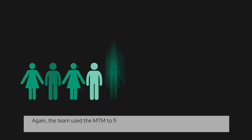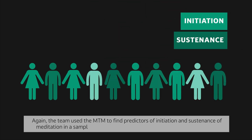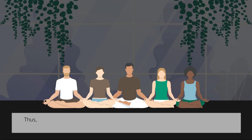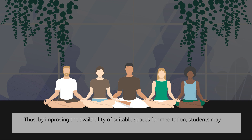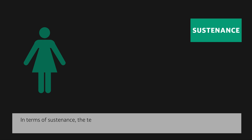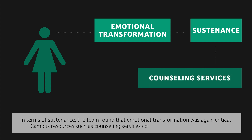Again, the team used the MTM to find predictors of initiation and sustenance of meditation in a sample of 65 students, 14 of whom engaged in the practice. This time, the physical environment was key to initiation — by improving the availability of suitable spaces for meditation, students may be more likely to take it up. In terms of sustenance, the team found that emotional transformation was again critical. Campus resources such as counseling services could be useful in facilitating this.